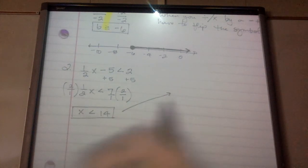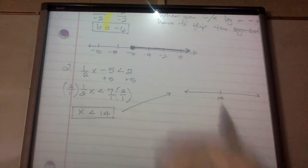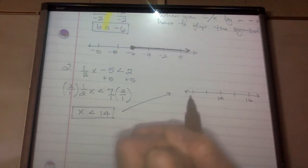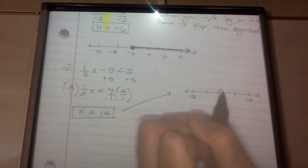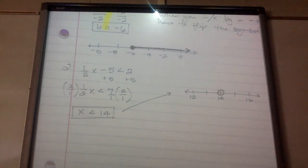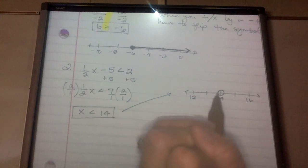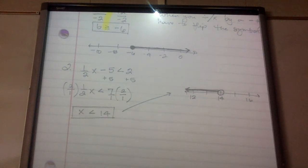So x is less than 14. I'm going to graph that. I like to put whatever number they gave me in the middle, so to the right would be numbers greater — 15, 16 — and to the left 13, 12. Because there's no equal to, my circle is open. I draw a line pointing in the direction of x is less than 14, so pointing to the left. Less than, left.